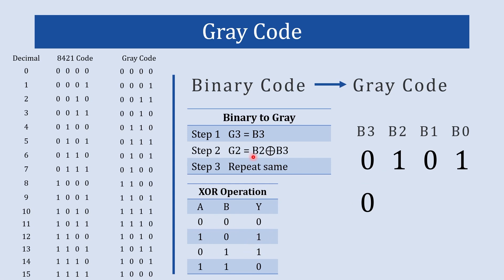Now let us check: we are going to do b2 XOR b3. Both inputs are different, so the output is 1. We then repeat the same process for b1 XOR b2 — both are different, so the output is 1. We will write 1 here.